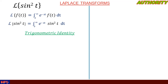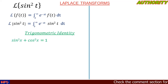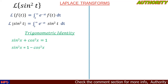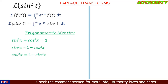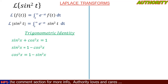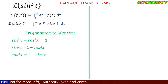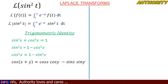Now let's take a journey to the land of trigonometric identities. We know that sin²x + cos²x = 1. Making sin²x the subject gives 1 − cos²x, and making cos²x the subject gives 1 − sin²x. Also, cos(x + y) = cos x cos y − sin x sin y.